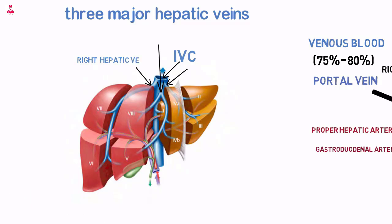The right hepatic vein, the largest, lies between the right anterior and posterior hepatic segments. It drains segments 5, 6, and 7, and enters the IVC at the right lateral aspect.